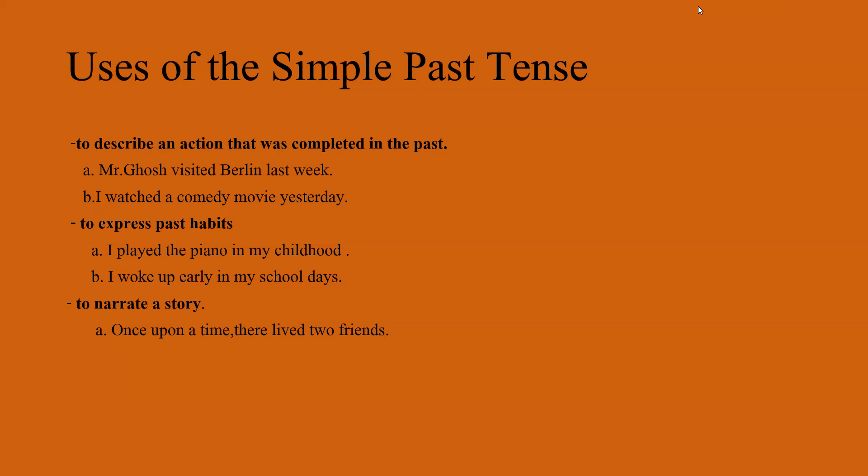Past facts also: the simple past tense is used to state facts or general truths about the past. For example, Mozart composed many symphonies. The Titanic sank in 1912. And then, to narrate a story: the simple past tense is commonly used in storytelling to describe events and actions that took place in the past. For example, once upon a time there lived a brave knight. The princess kissed the frog and it turned into a prince.